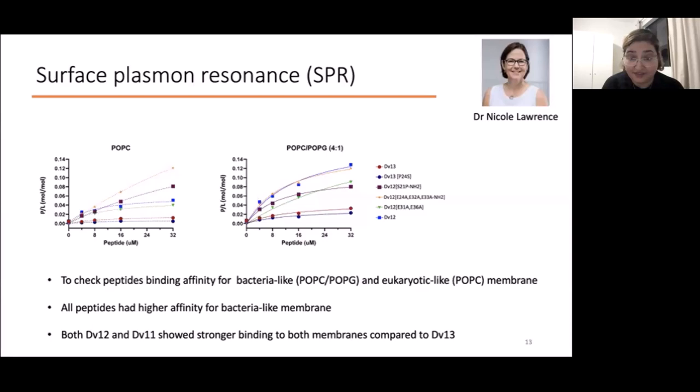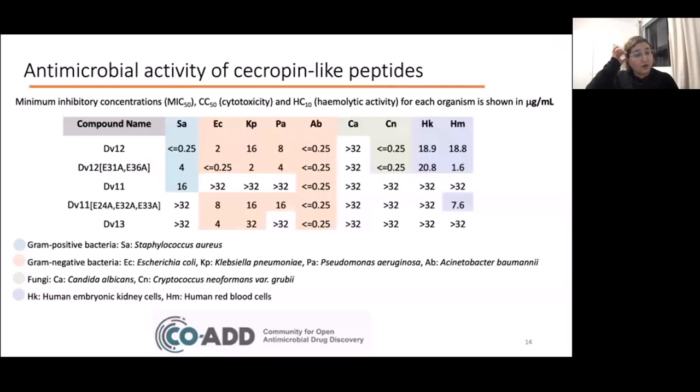We submitted this to COAD, which is our Community for Open Antimicrobial Drug Discovery here at IMB, to see how they would act against different pathogens. All of the sacropine-like peptides were active against Acinetobacter. Neutralizing acidic residues in DV11 and 12 reduced their activity against Staphylococcus but improved their activity against E. coli in both peptides. Replacing acidic residues with alanine increased the hemolytic activity on red blood cells, so it looks like they are getting more selective towards the mammalian cells.